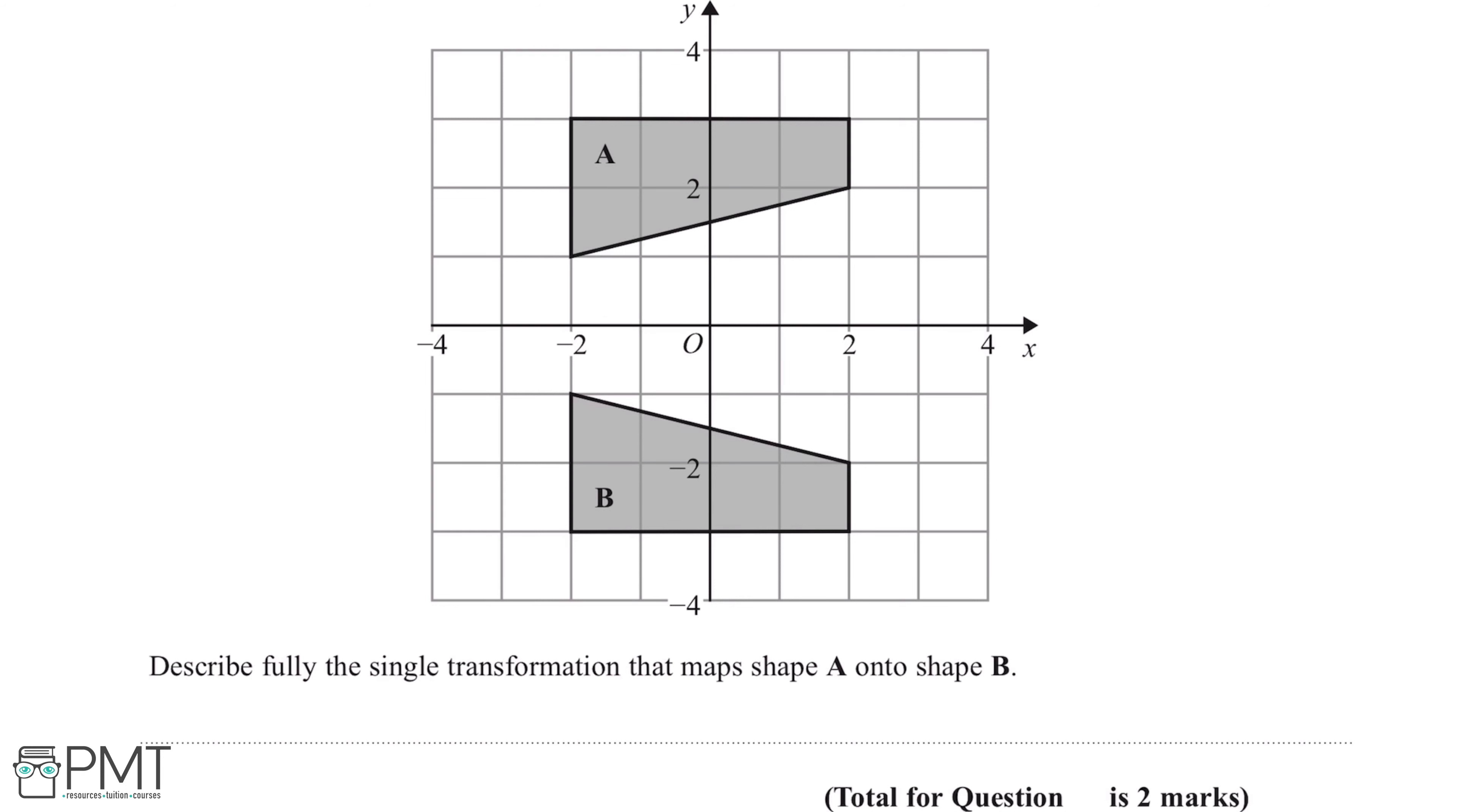So if we take a look at the grid which we've been given, shape A is exactly the same size and same shape as shape B, however it's a mirror image.